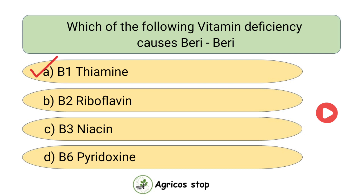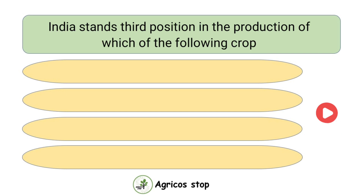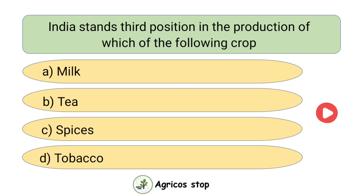Which vitamin deficiency causes Beriberi? Options are B1 Thiamine, B2 Riboflavin, B3 Niacin, and B6 Pyridoxin. The answer is B1 Thiamine. Thiamine deficiency causes Beriberi.